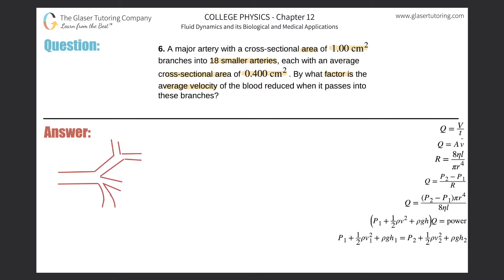All right, so the main theoretic idea here is that the volume flow rate through this major artery here will equal the volume flow rate through these smaller branches. Now there's 18 of these branches.